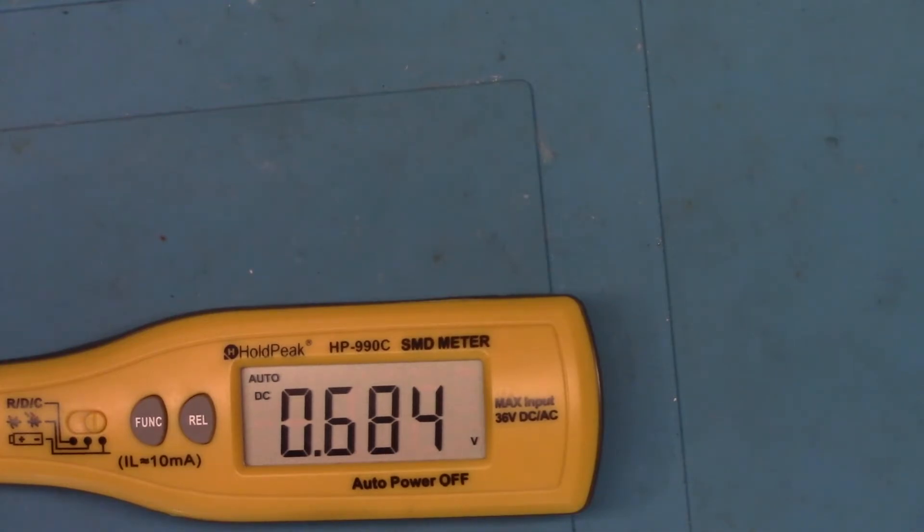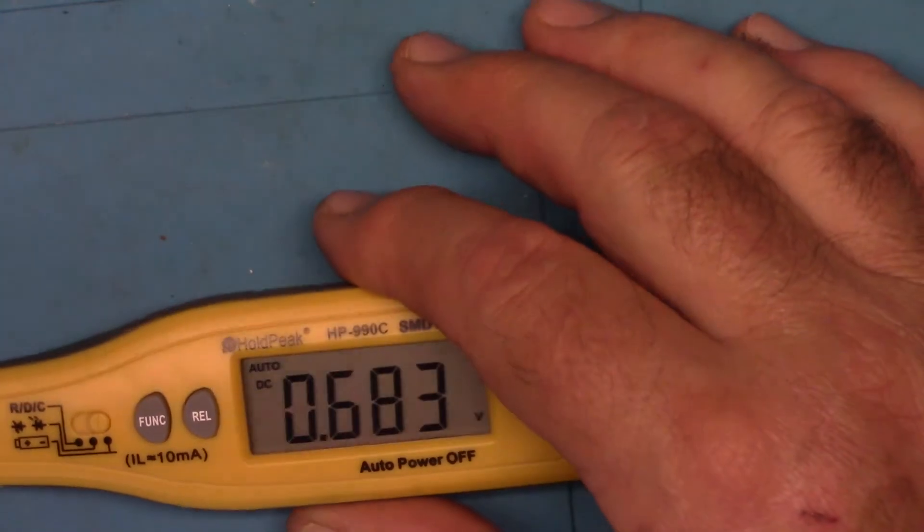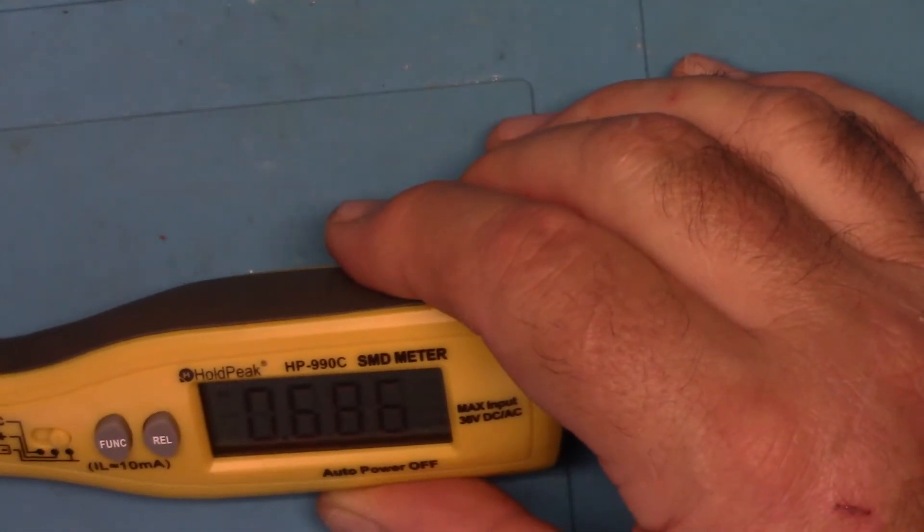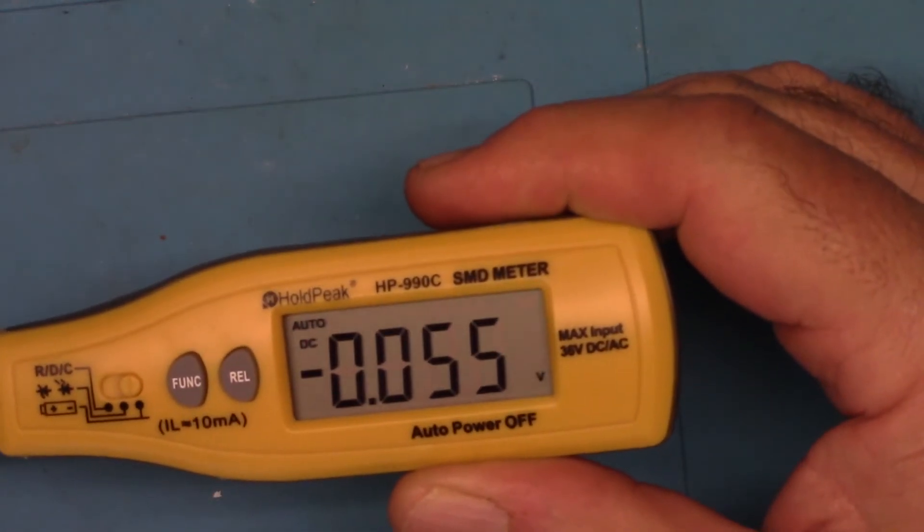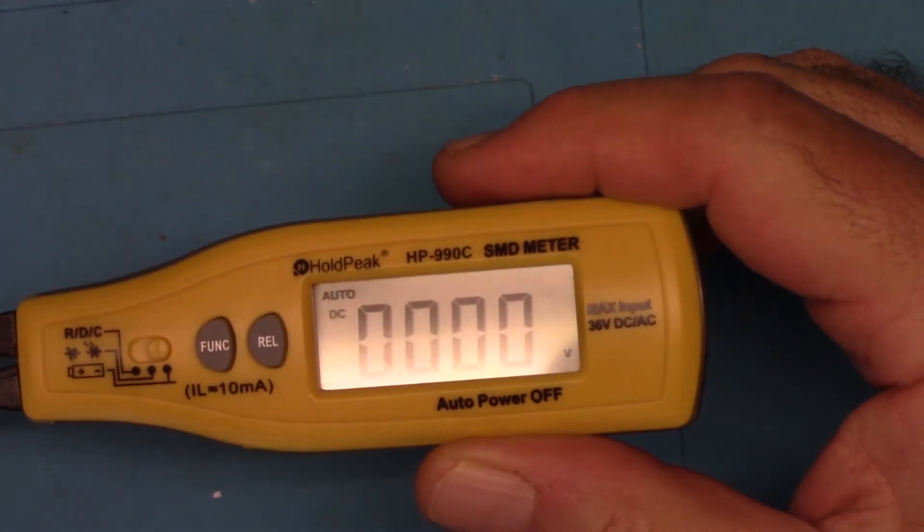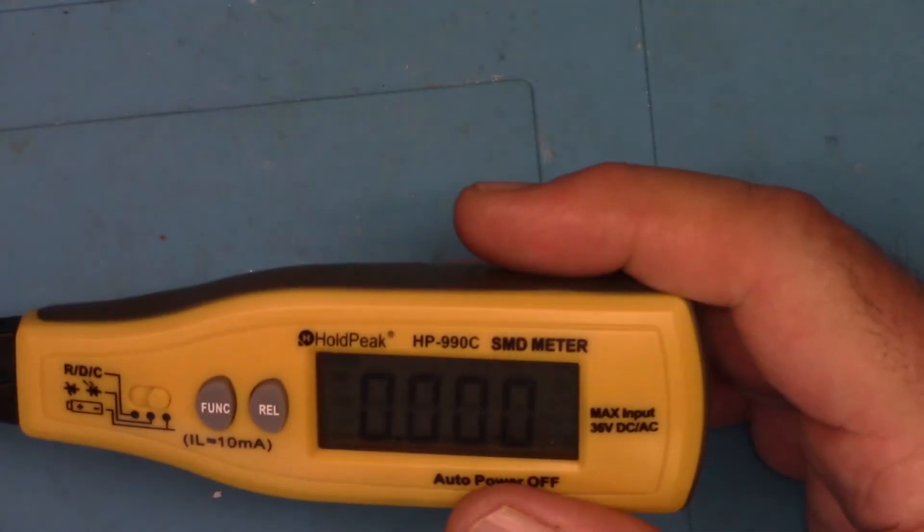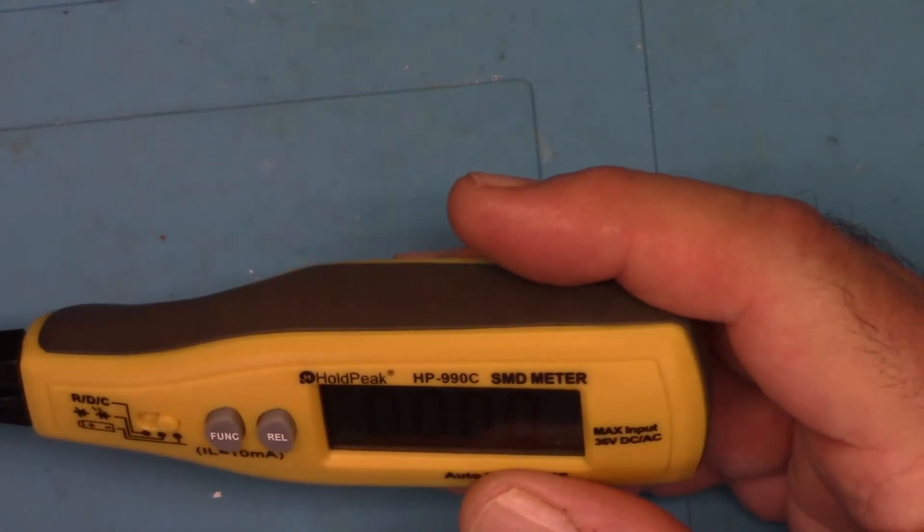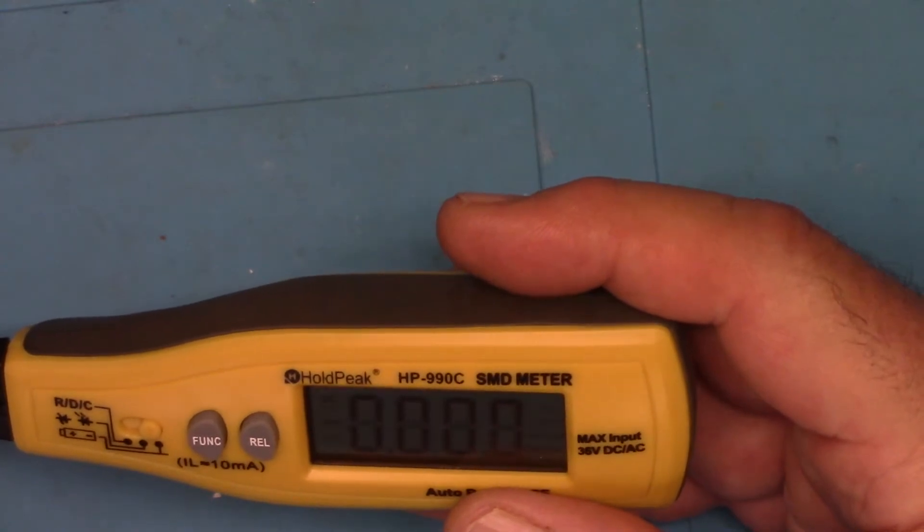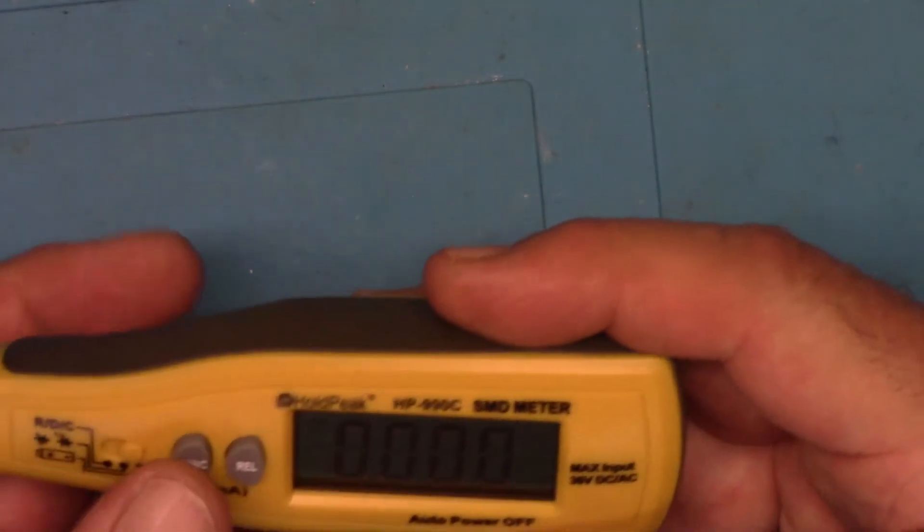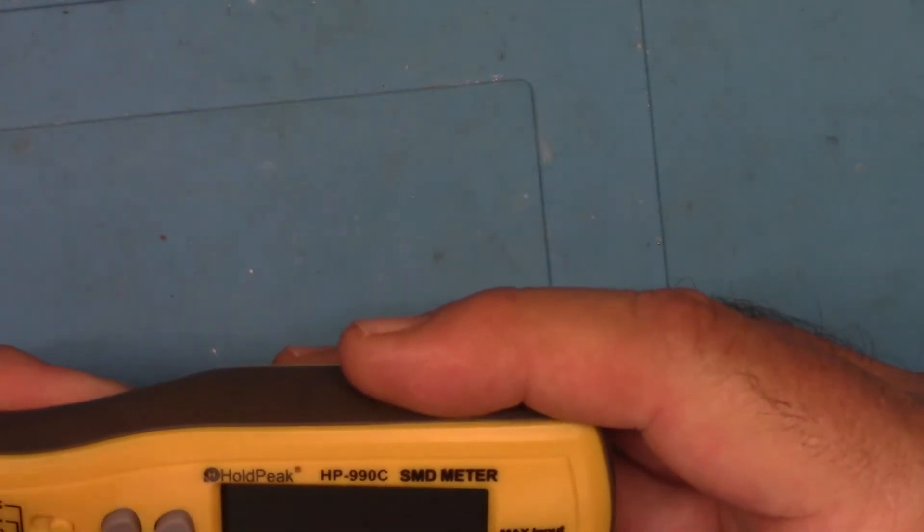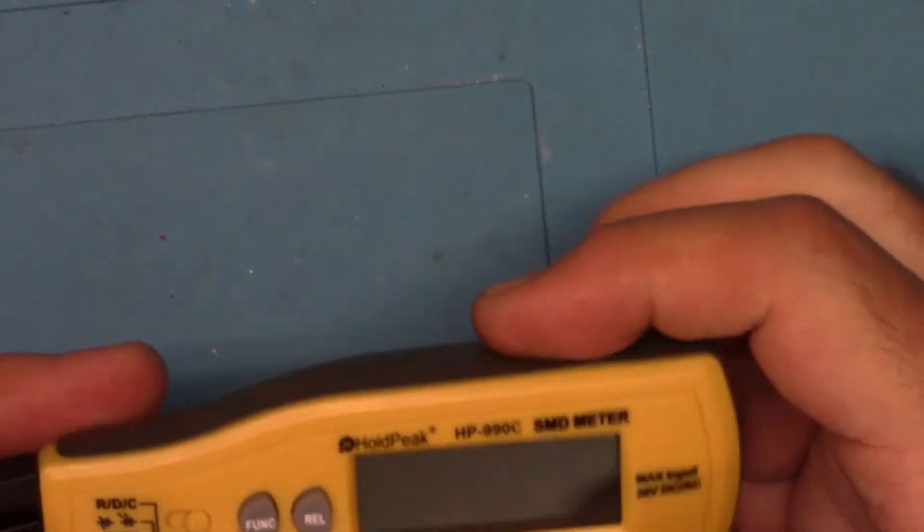That makes no sense at all. I'm going to call it a day with this one guys. This is a HoldPeak HP-990C SMD meter. I bought this on Amazon, it was about 20 dollars. I'm going to have to tell you not to buy this. I don't recommend this at all because this thing is 27 kinds of sketchy. The readings don't make any sense at all on it, which is a shame.